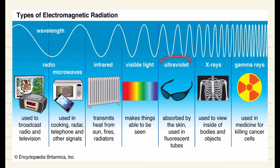Then comes the ultraviolet waves. Ultraviolet waves are basically absorbed by the skin and they are used in fluorescent tubes. Ultraviolet waves are also used for sanitizing purposes — we sanitize laboratory instruments using ultraviolet radiations. And sometimes ultraviolet radiations are also used in adhesive materials to join different materials.